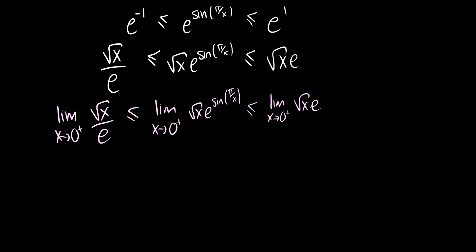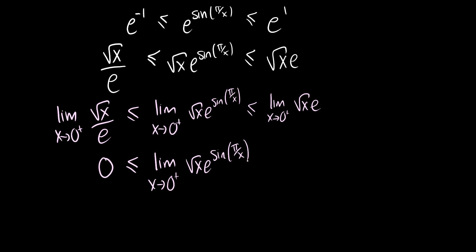Now let's evaluate these limits. The limit as x approaches zero from the right of the square root of x over e is just zero over e, which equals zero. So zero is less than or equal to the limit as x approaches zero from the right of the square root of x times e to the sine of pi over x. For the upper bound, the square root of x times e gives zero times e, which is zero. Therefore, because the lower bound is zero and the upper bound is zero, the limit as x approaches zero from the right of the square root of x times e to the sine of pi over x also equals zero.